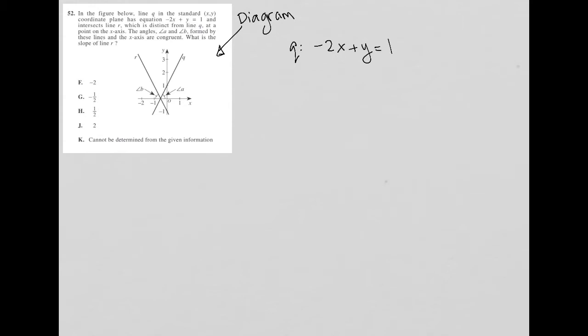I'm going to convert this into slope-intercept form because I prefer to see equations of a line in slope-intercept form. So this becomes Y equals 2X plus 1, where the slope M is 2, and B, the Y-intercept is 1.